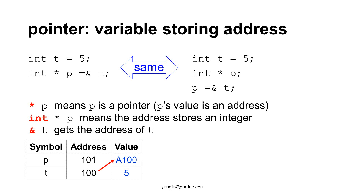The next line creates a pointer called 'p'. p is a pointer because there is an asterisk in front of p. By adding an asterisk, p is a pointer. This means p's value is an address. We also need to specify what type of information is stored at that address. This example uses 'int' as the type, meaning the address stores an integer. Adding '&' in front of t means getting the address of t. In this example, t's address is 100, so p's value is 100.